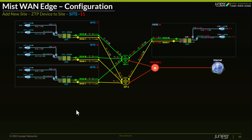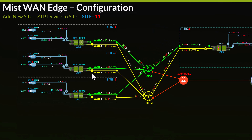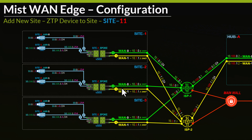So far, we have onboarded three spokes — site 1, site 2, site 3 — in a single hub, all using VSRXs because this is my lab setup. We also have two LAN segments in each site: LAN 0 and LAN 1.